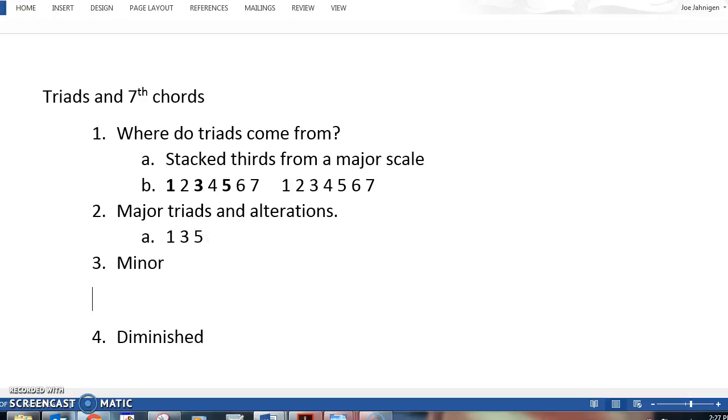A minor triad is a 1, a flat 3, and a 5. A flat 3 is a lowered third, so you take the third down one half step.